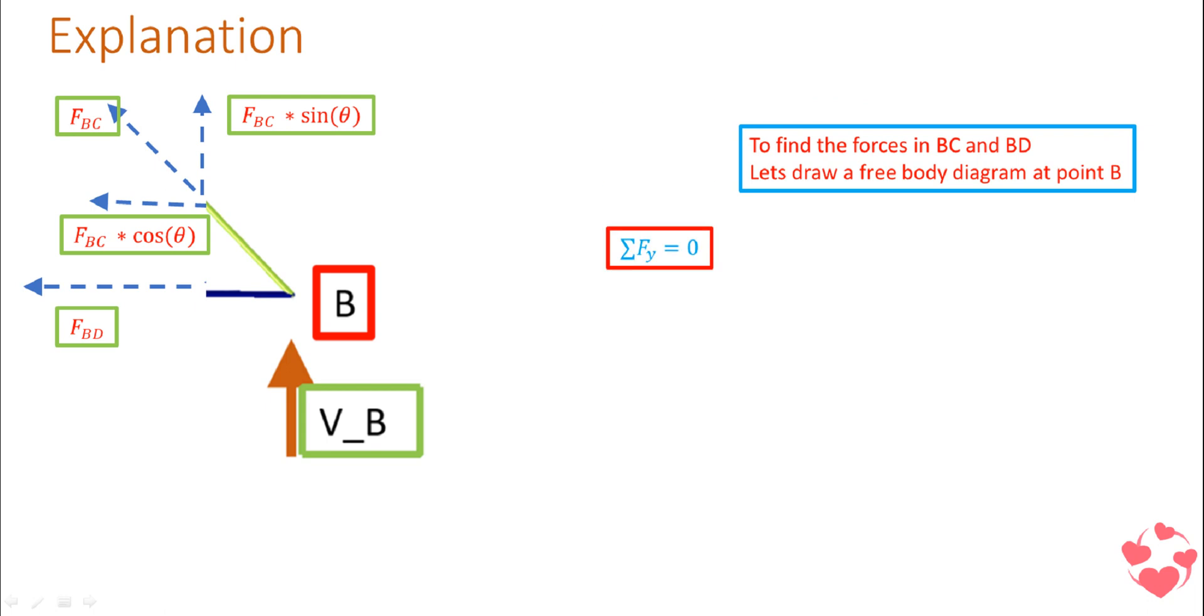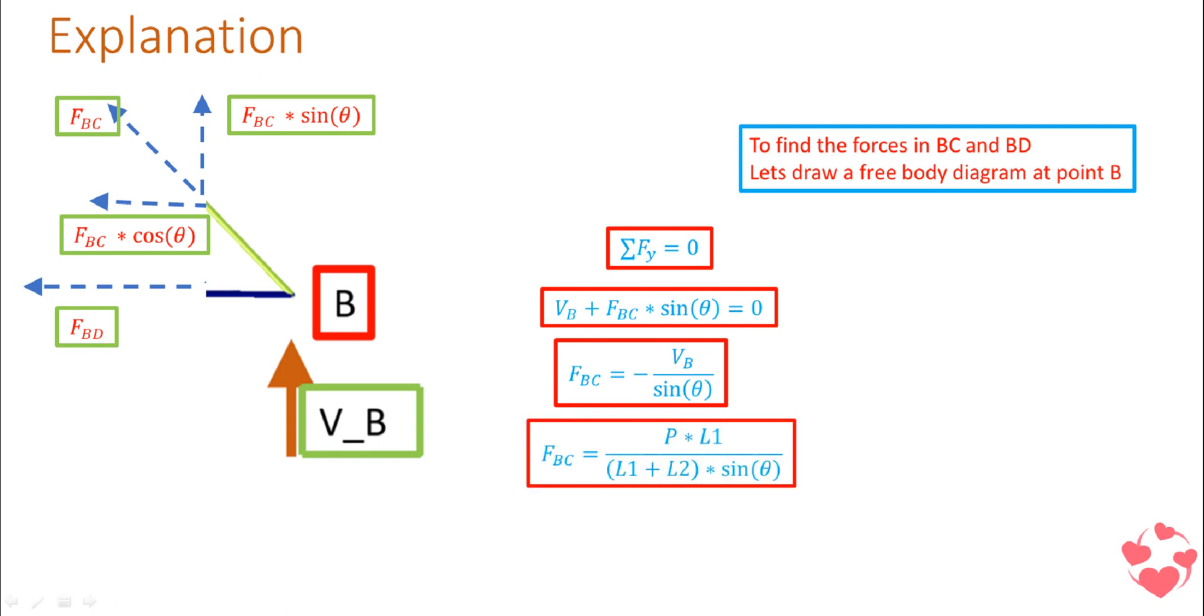To find the forces in BC and BD, let's draw a free body diagram. Equate the forces in the y direction, so you will get VB plus FBC sine theta equals zero. You can get the value of force in BC since VB we have already calculated in the previous section. Then substitute the value of VB in terms of P, because P is the known value and L1 and L2 will be the known values.